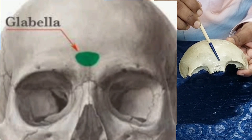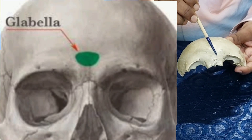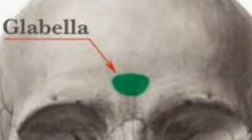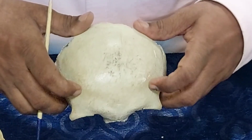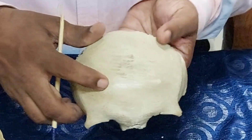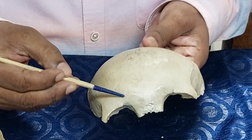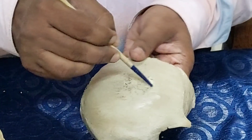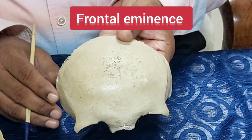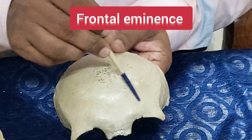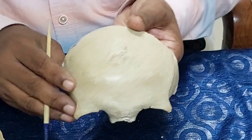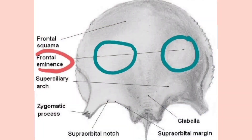Glabella is an anatomical landmark of the frontal bone located superior to the nasion. The term 'glabella' means hairless or glabrous — it is a smooth, hairless area between the two eyebrows. Another rounded elevation on the external surface, approximately 3 cm above the midpoint of the supraorbital margin, is called the frontal eminence, frontal tuber, or frontal tuberosity. This is more prominent in young individuals and females, while the supraciliary arch is more prominent in males.